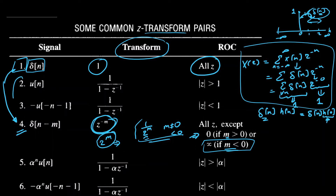Pairs two and three are linked with pairs five and six: if you set a equal to one in pairs five and six, you fall back to pairs two and three. The proof of pairs five and six is given in another video, the link to which is shown now.